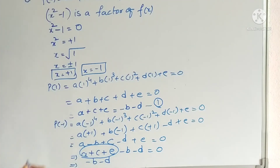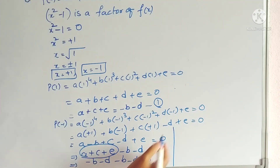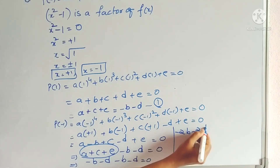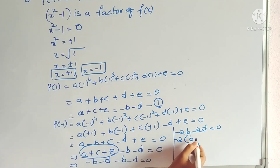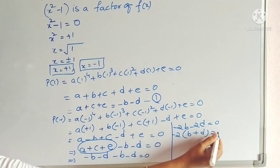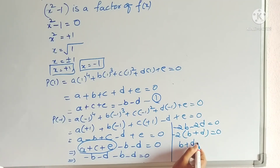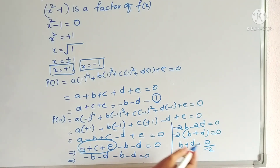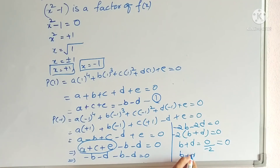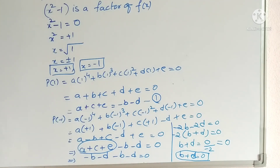Substituting the value of (a + c + e) from equation 1 into equation 2: −b − d = −b − d. Adding both sides: −2b − 2d = 0. Taking −2 as common: b + d = 0. So we have proved b + d = 0.